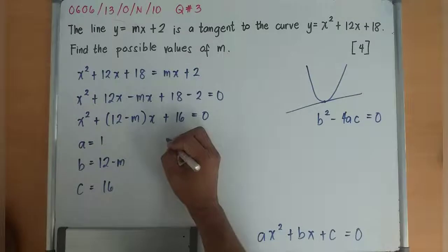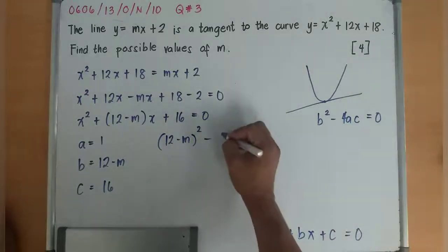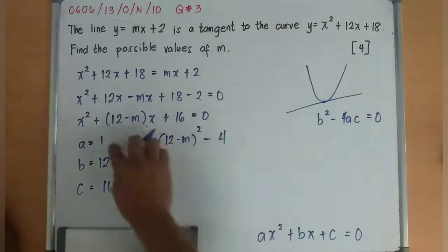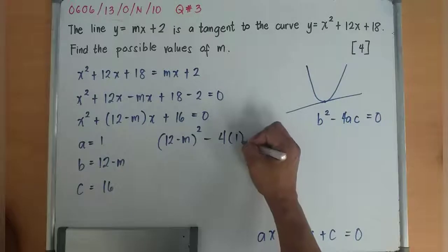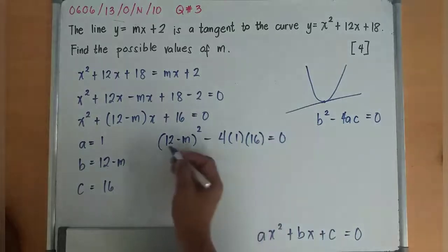The b is 12 - m. I'll square that. Minus 4 times the a is 1, then times the c is 16, is equal to 0.